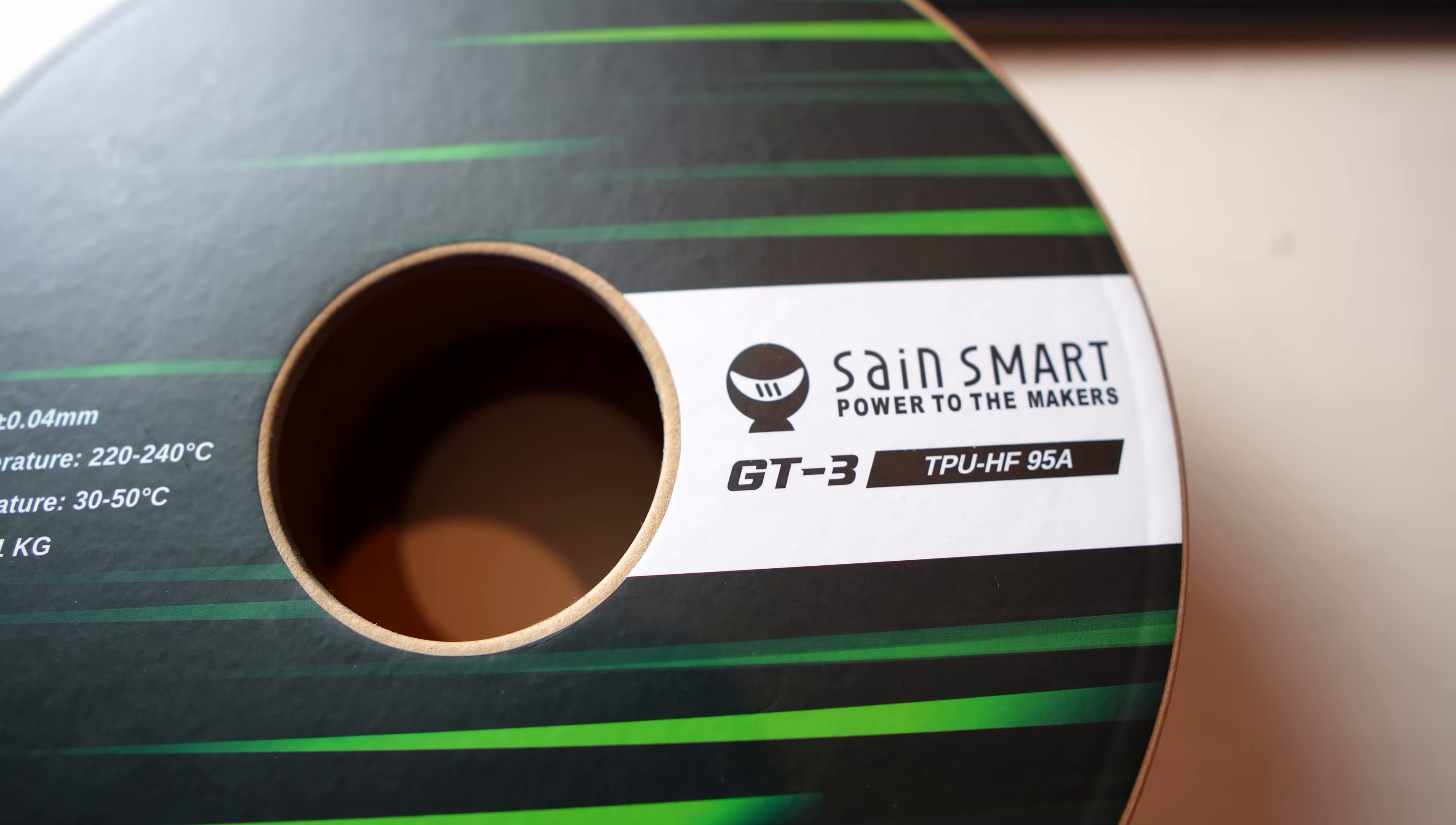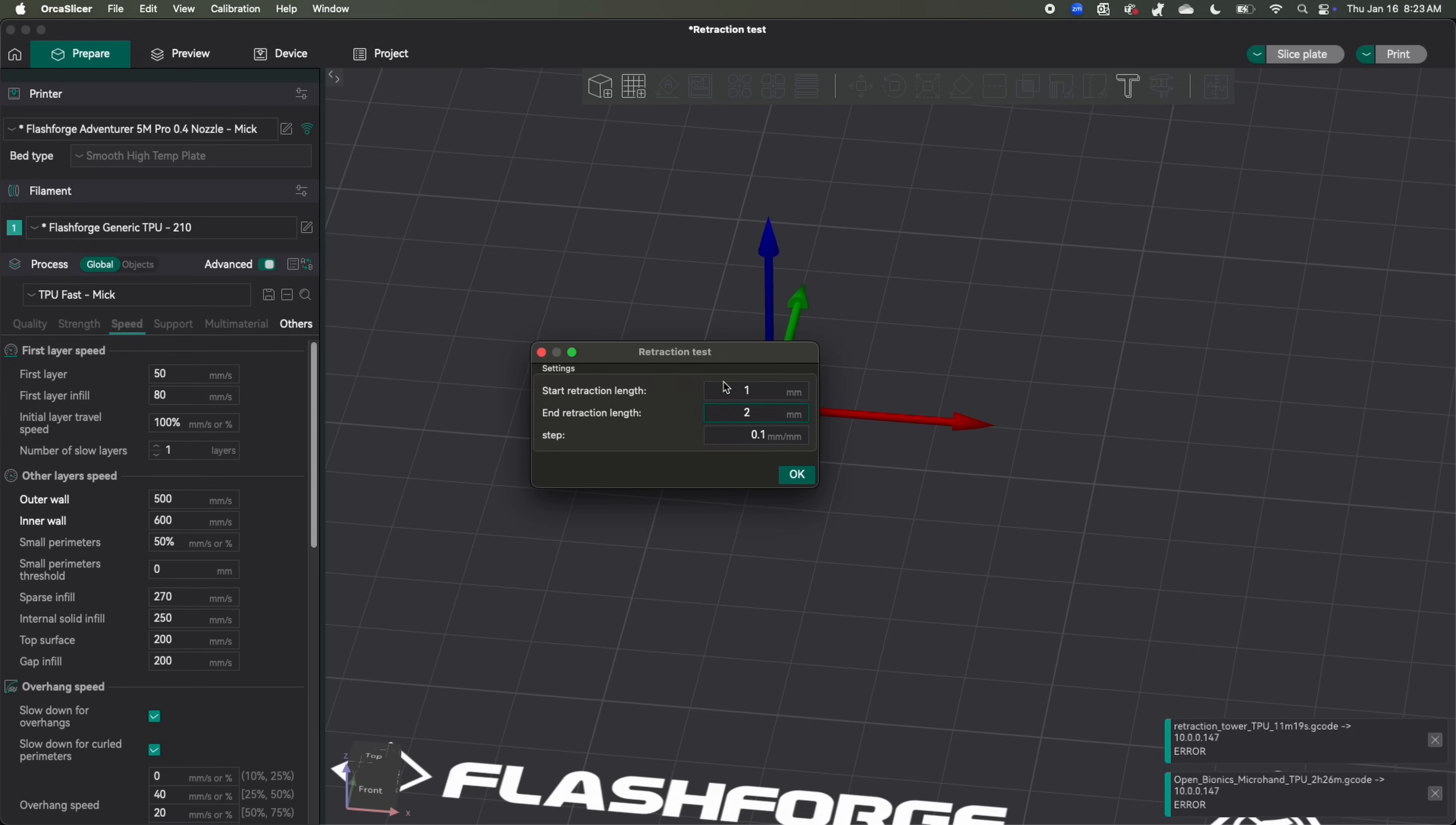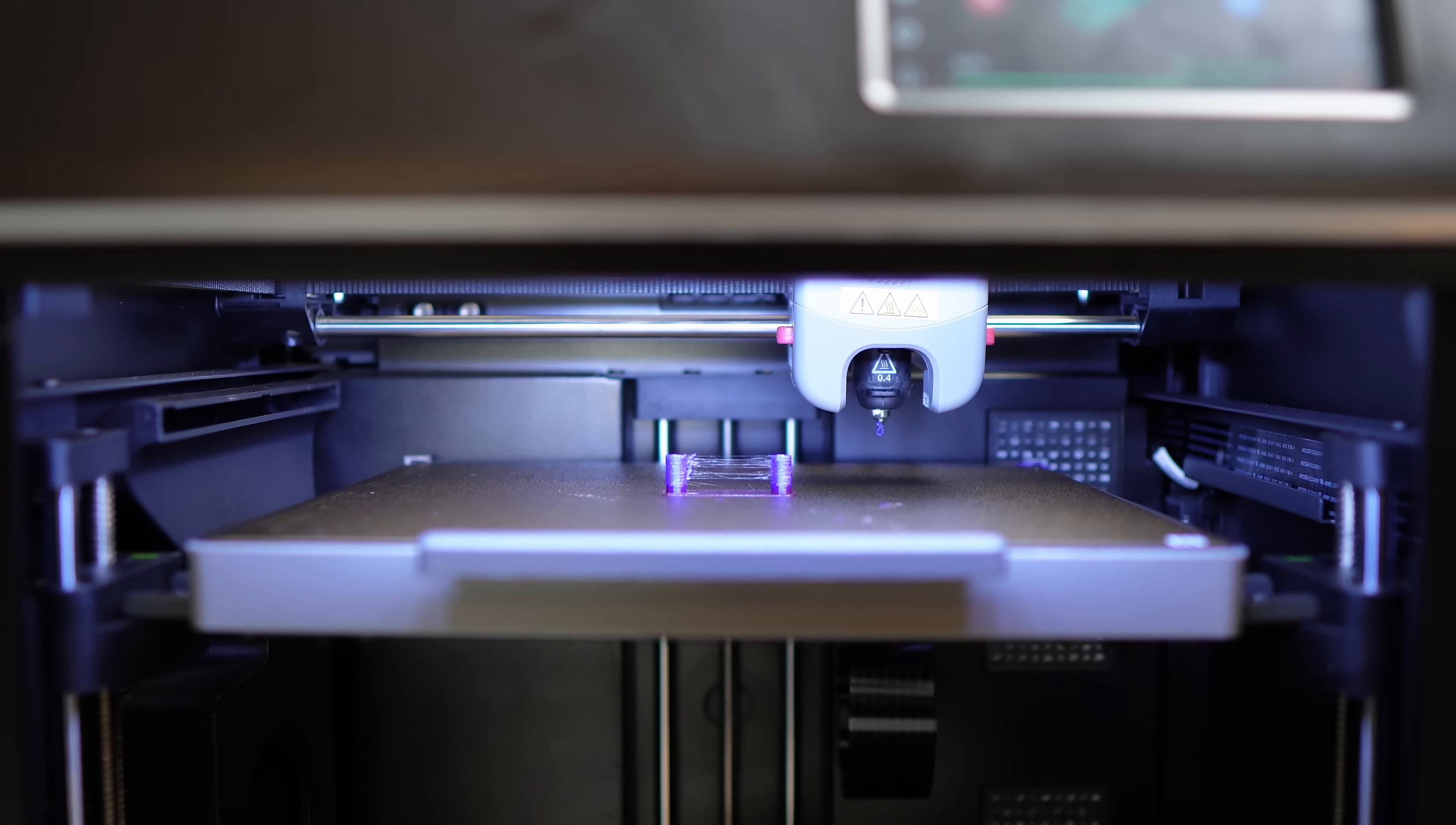The TPU is from SainSmart and suggests printing anywhere between 220 and 240 degrees Celsius. This is some of my favorite TPU. I'll drop a link down below. I'll set the temperature at 230 and use retraction settings between 1 and 2 millimeters. Then I'll send it to my FlashForge printer. Here's the result. Pretty terrible.